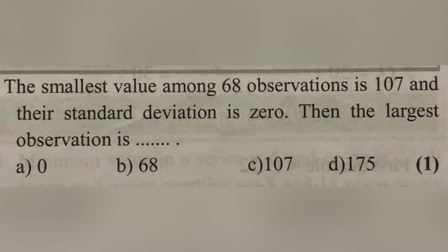The smallest value among 68 observations is 107 and their standard deviation is 0. Then the largest observation is also 107. When standard deviation equals 0, all values are equal, so the largest observation equals the smallest, which is 107.